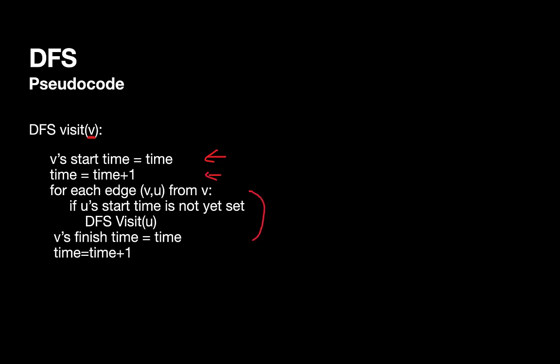We'll process all of the edges leaving that vertex. If an edge connects to another vertex U that has not yet started being processed, we'll recursively call our DFS visit — equivalent to pushing something onto the stack. We temporarily pause processing vertex V, go off and process vertex U recursively until we're completely done with U, then return and process V. Once we get back to V, we mark that we're done with it, setting V's finish time to the current time and advancing by one.